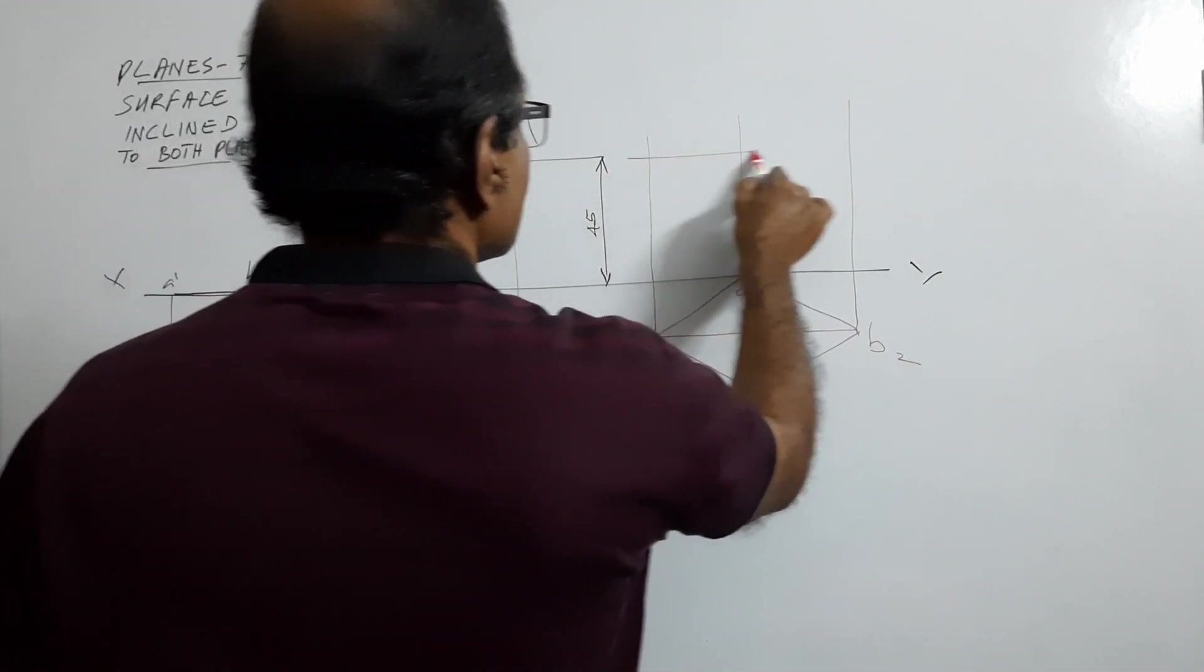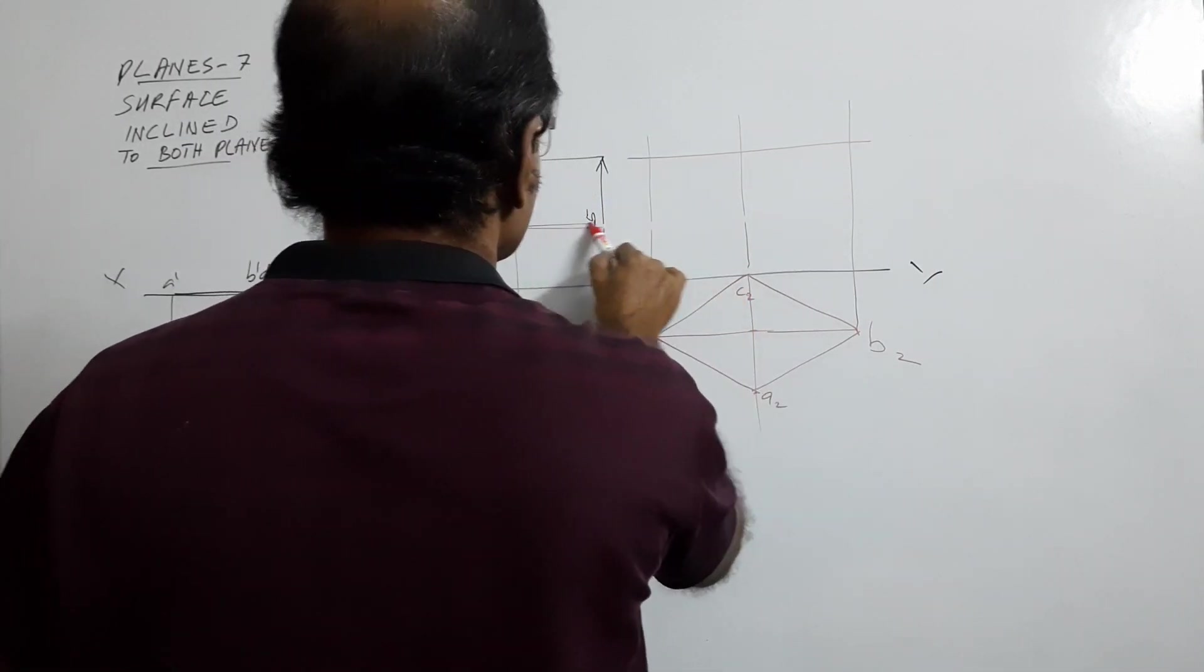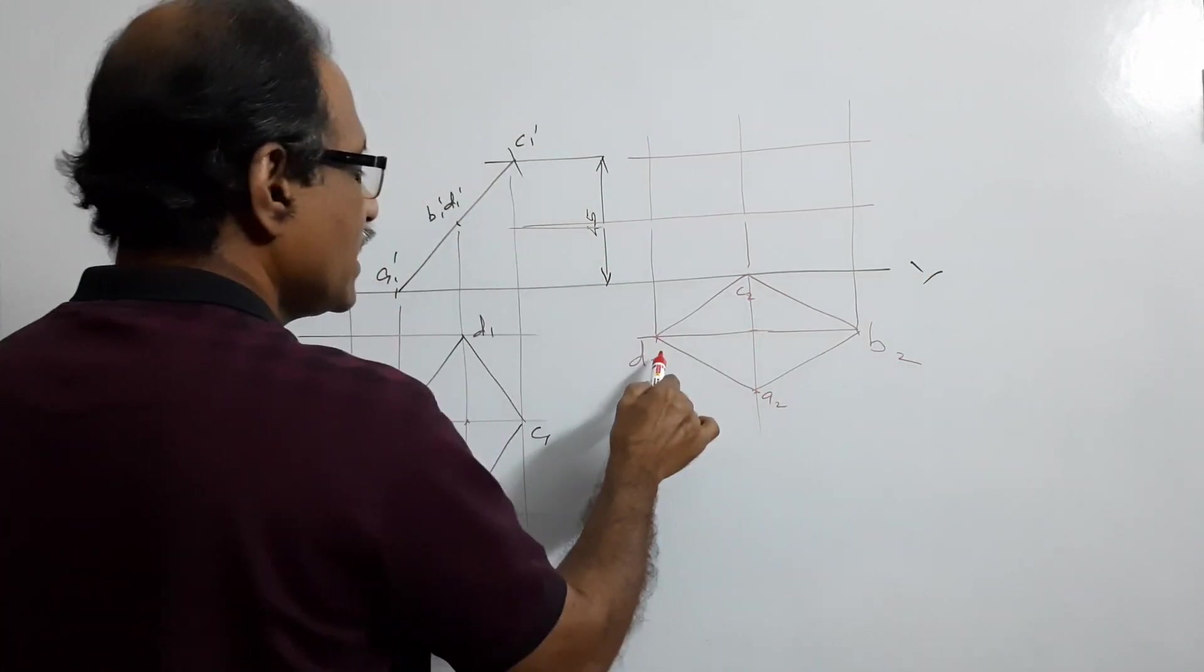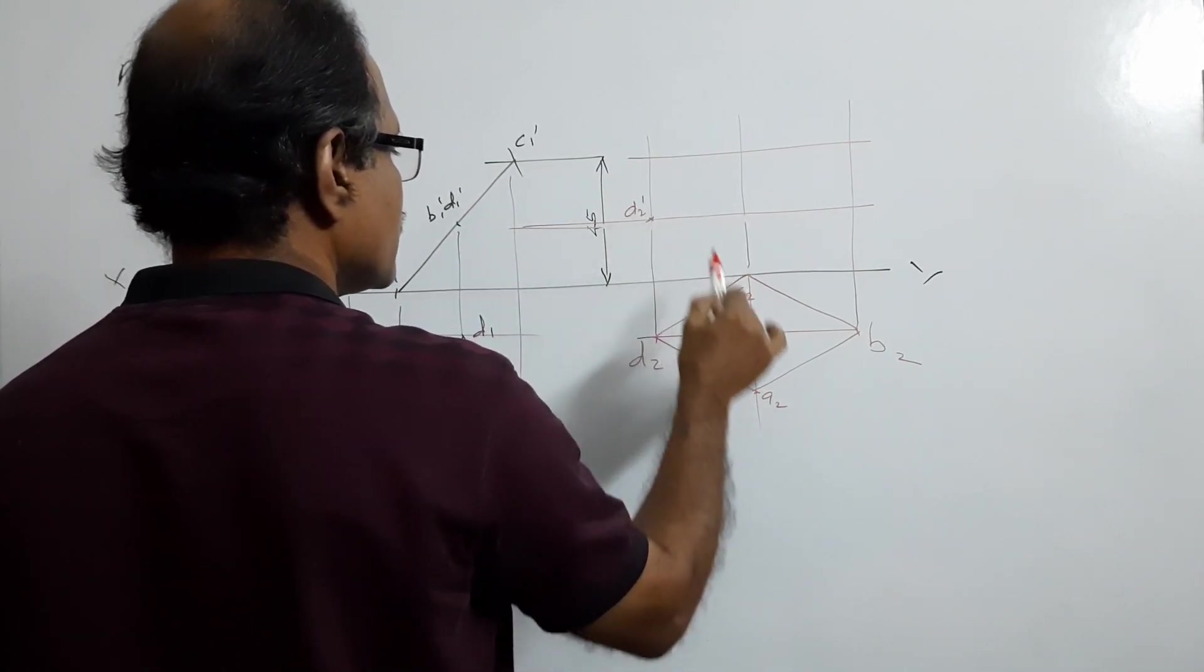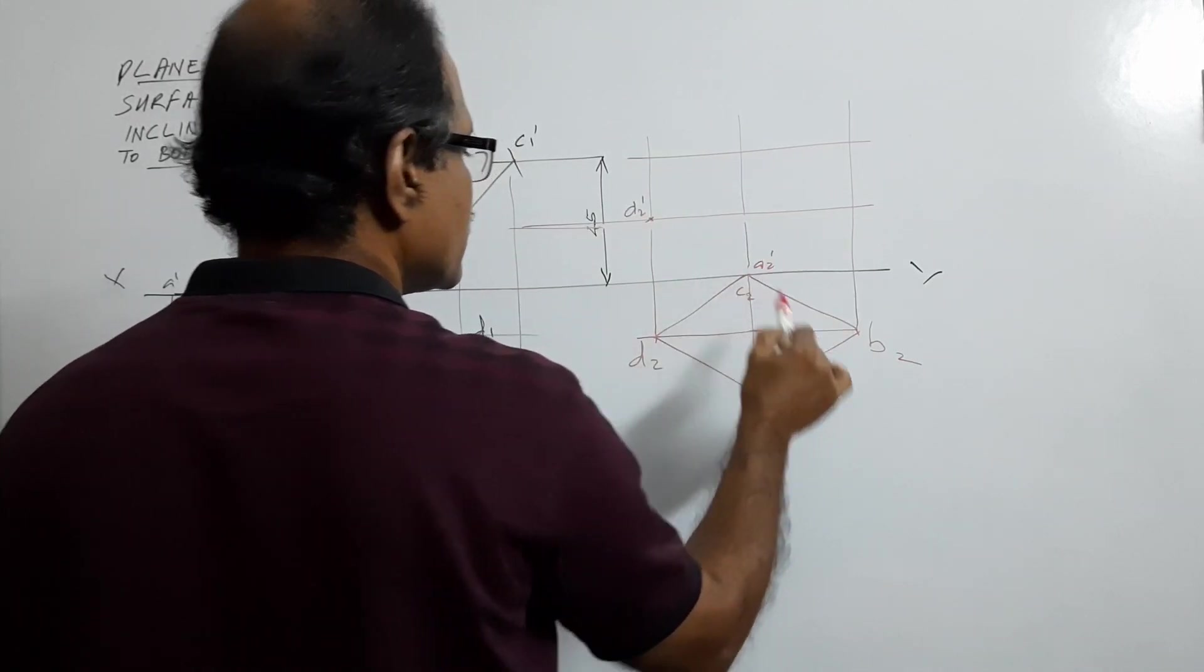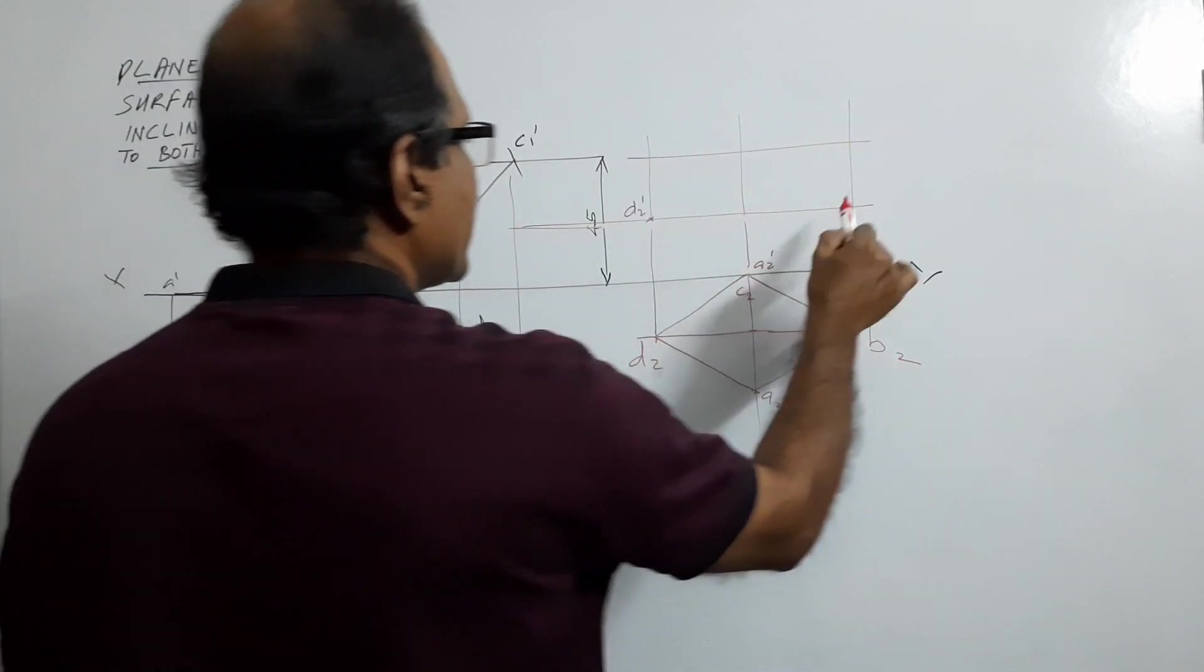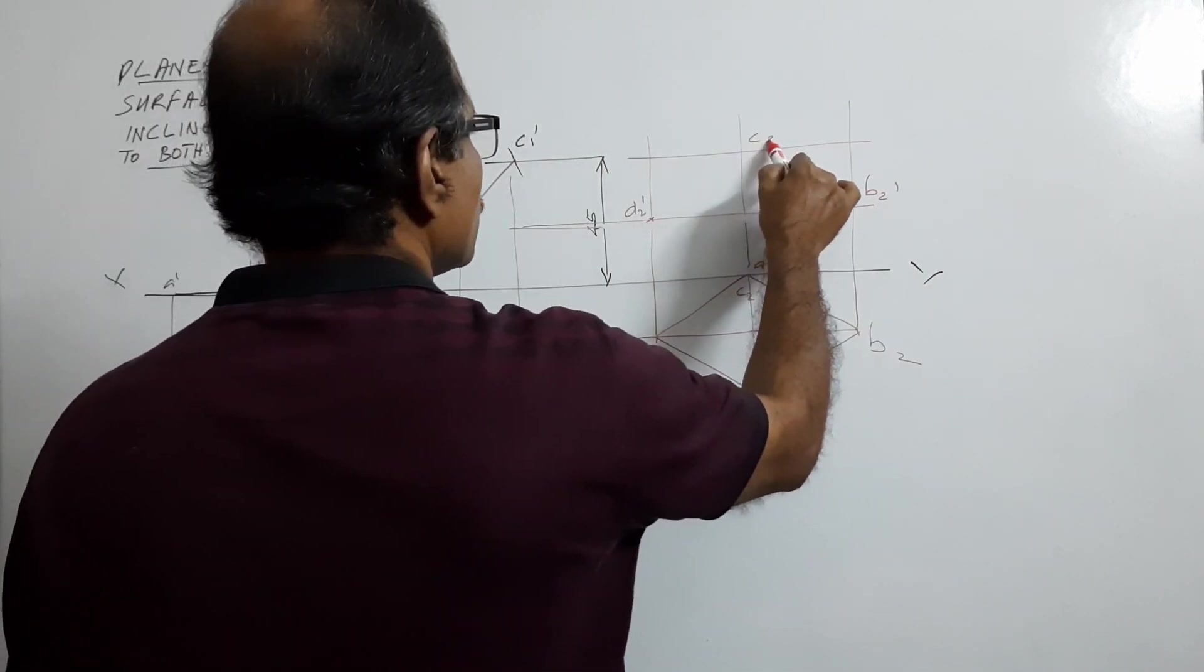Draw horizontal projectors. D2 D1 dash D2 dash, A2 A1 dash A2 dash, B2 B1 dash B2 dash, C2 C1 dash C2 dash.